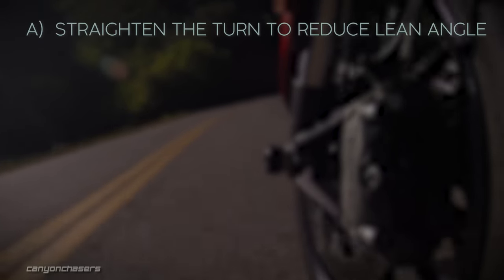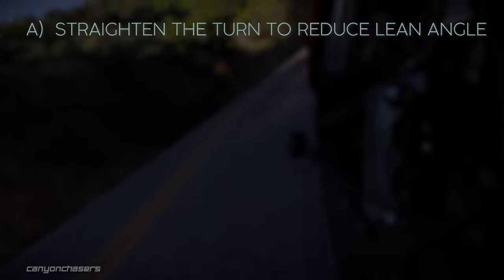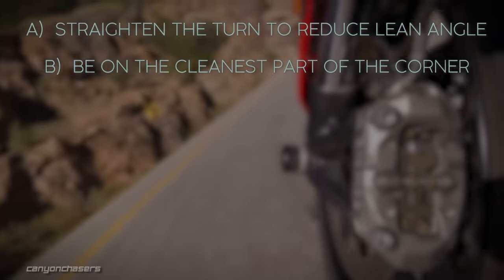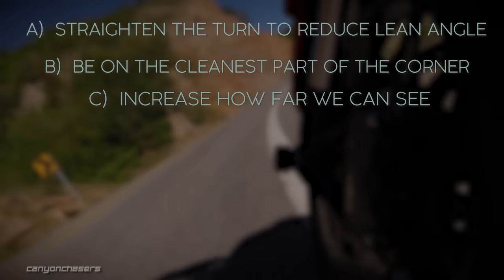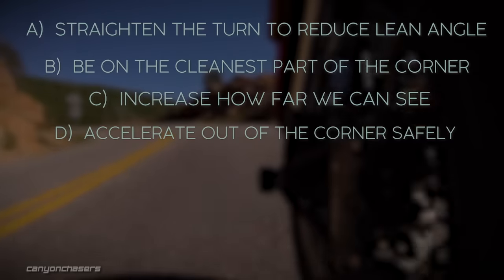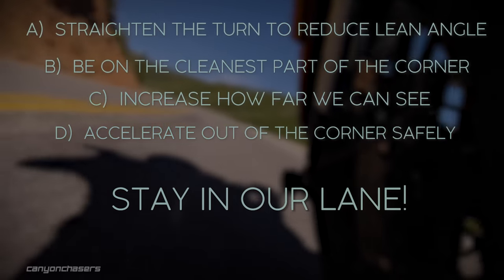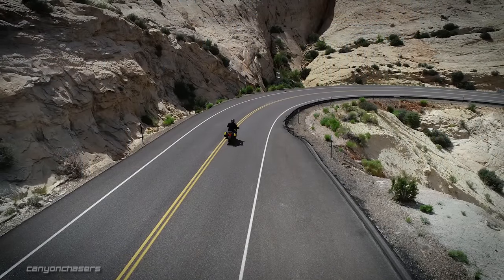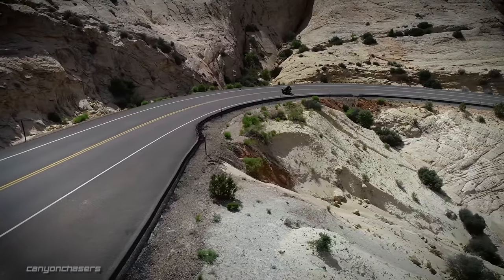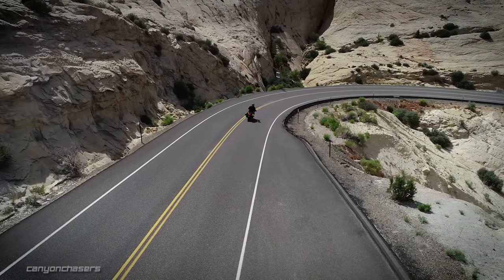We want to widen the arc of the corner as much as we can to straighten the turn and reduce lean angle. We want to put our tires on the cleanest part of the road. We want to increase how far we can see through the corner as much as we can. We want to be able to get on the gas and accelerate out of the corner safely. And finally, and most importantly, we want to stay on the road and in our lane. Staying wide and gently slowing until we can see our exit and then defining our apex is one of the best ways to achieve all of these goals. One of the most important steps is to enter the corner as wide as we safely can — we want to enter corners as wide as we safely can.